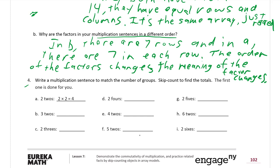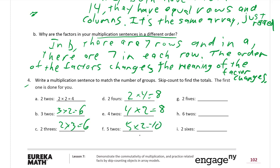Number four: write a multiplication sentence to match the number of groups and skip count to find the totals. The first one is done for you. Three twos: three times two equals six. Two threes: two times three equals six — commutative property. Two fours: two times four equals eight. Four twos: four times two equals eight. Five twos: five times two equals ten. Two fives: two times five equals ten. Six twos: six times two equals twelve. Two sixes: two times six equals twelve.